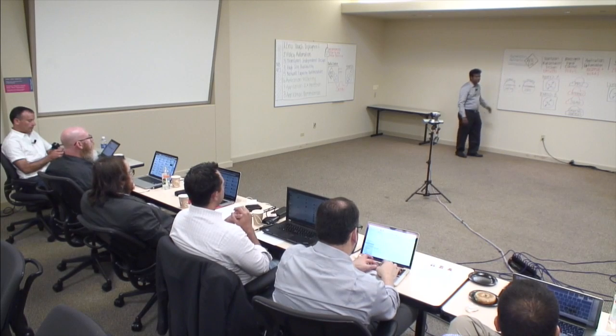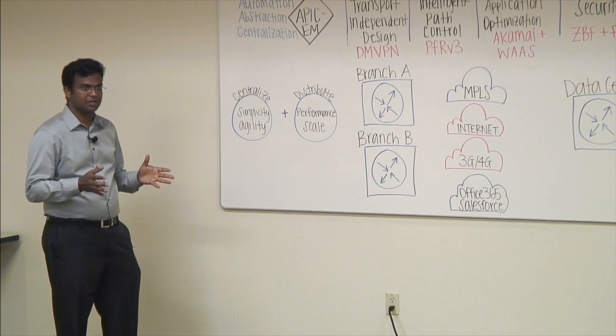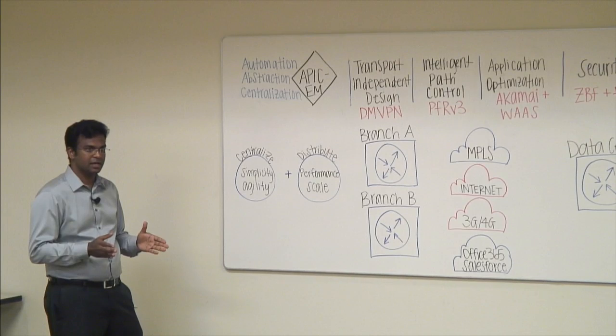Zero-touch deployment lets you enable the branch, but what about maintenance? If something went wrong — say someone changed something on the branch — you want to get it back to the same configuration and state. Policy automation is not just about pushing configuration and leaving it. It's about managing the entire lifecycle of the device, ensuring it is compliant with what you are administering from the controller. So zero-touch deployment, policy automation, system verification, and troubleshooting are all things we centralize and abstract away.